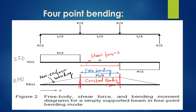Here we see the four-point bending case. A simply supported beam has loads applied at two positions. The reaction is P by 2 at each support. The shear force diagram shows a constant shear force of P by 2 in the initial span L by 3, then shear force is 0 in the mid span, and minus P by 2 — also constant — in the right span L by 3.